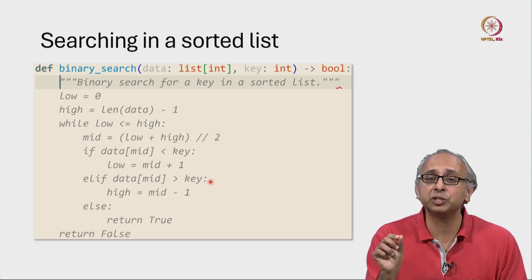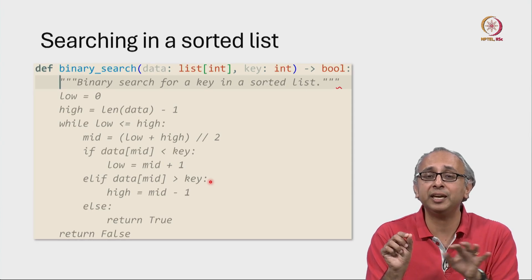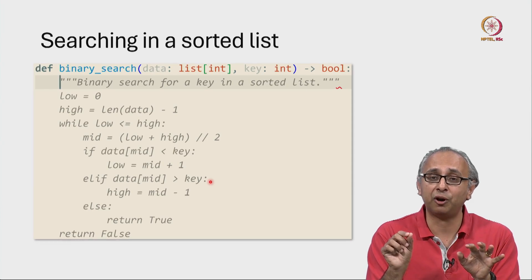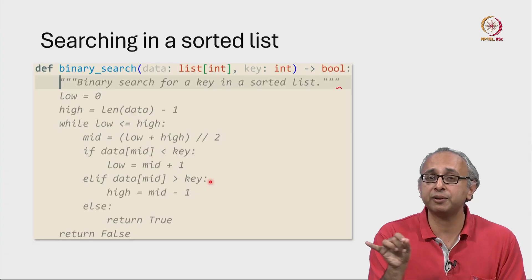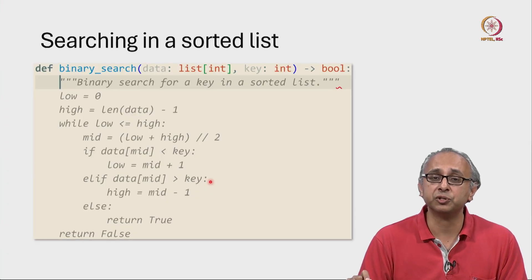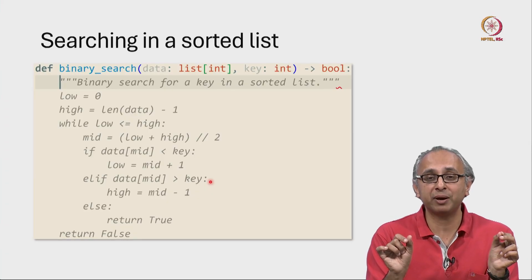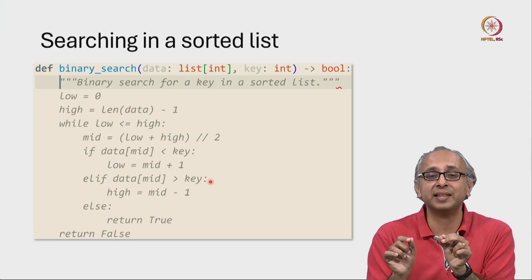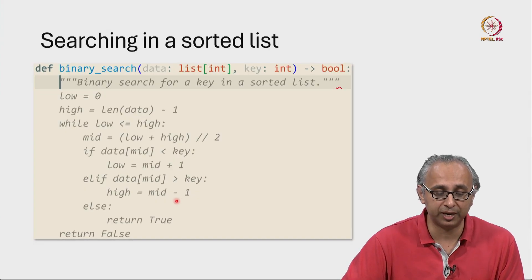if the item at the mid point is too large, there is no point looking in the upper region of this list. We should focus our attention on the lower region. So we can move our high point from where it currently is to one less than the mid point. And that is what we try and do over here.